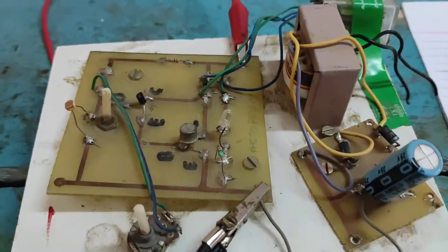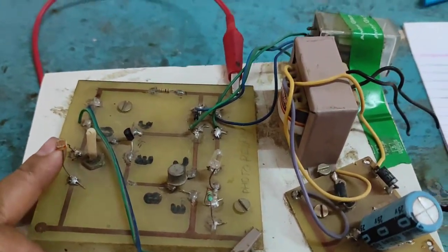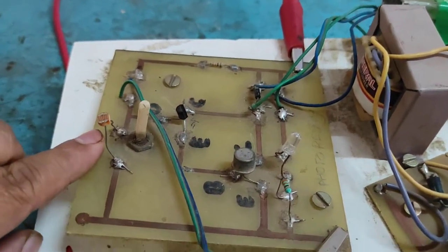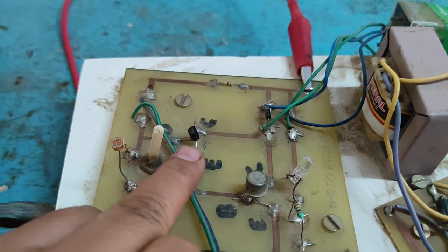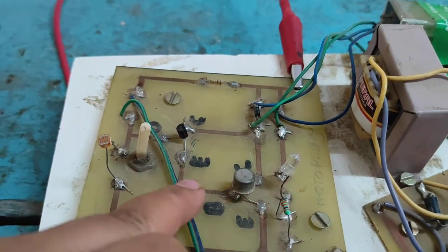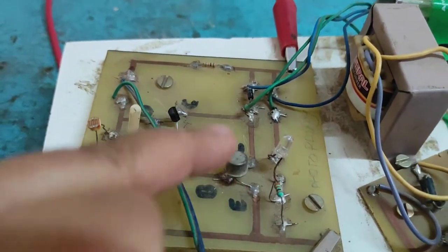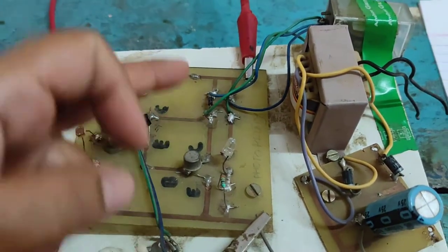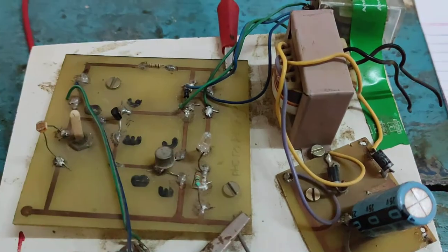That light condition in LDR. The voltage across LDR is low. Then T1 is off. That time T2 also off. No current through relay coil. Then the relay is off. That time LED also off.